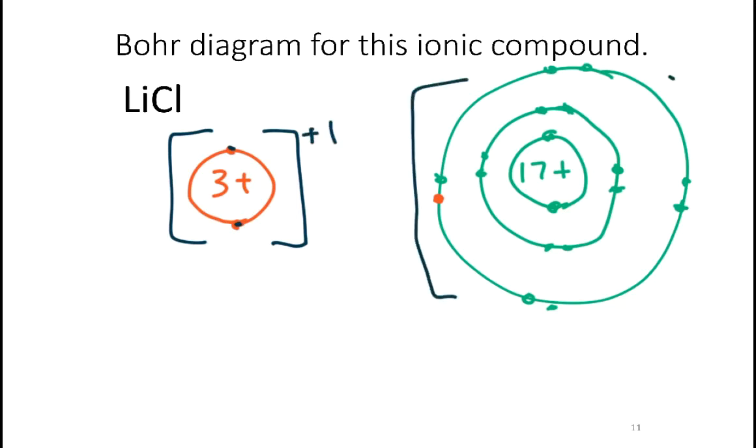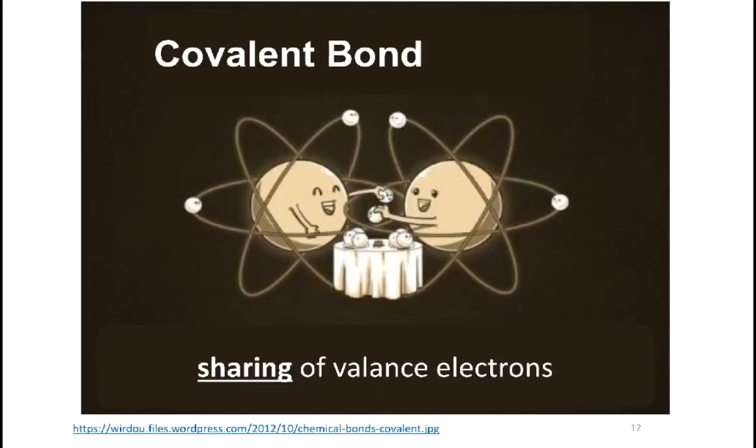The brackets are the way that you indicate that, at least for us at this level, it's the way you're going to indicate that electron transfer has occurred. So for the chlorine, it's got 17 protons. Now it's got 18 electrons. So it has a negative one charge, and they are drawn together by electrostatic attraction. And that is an ionic bond.